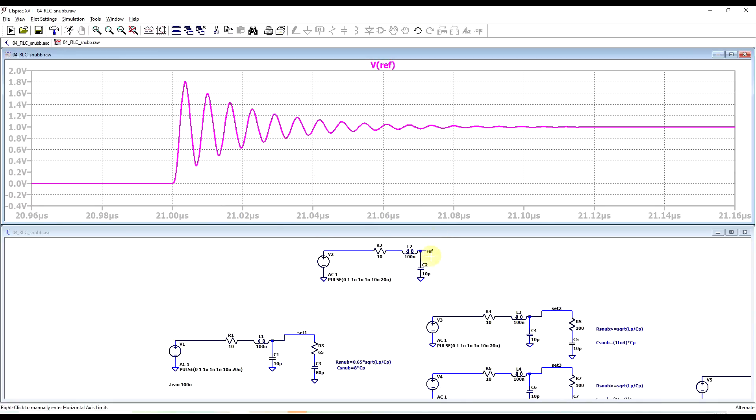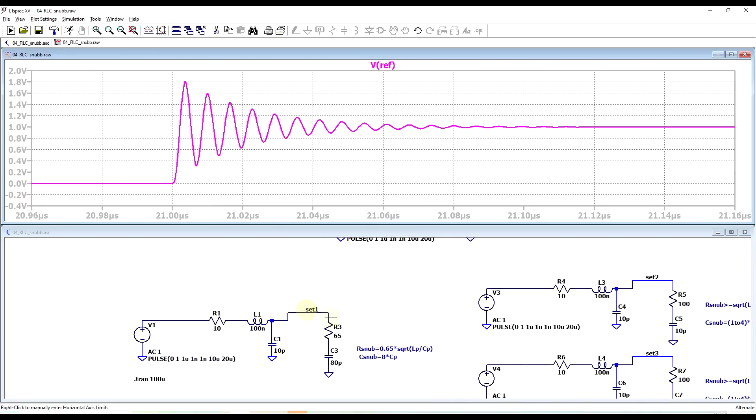So we can start off by comparing our reference to the first set of components, so where the snubber resistor is 0.65 times the square root of the parasitic inductance divided by the parasitic capacitance, and the snubber capacitor is 8 times the parasitic capacitance.